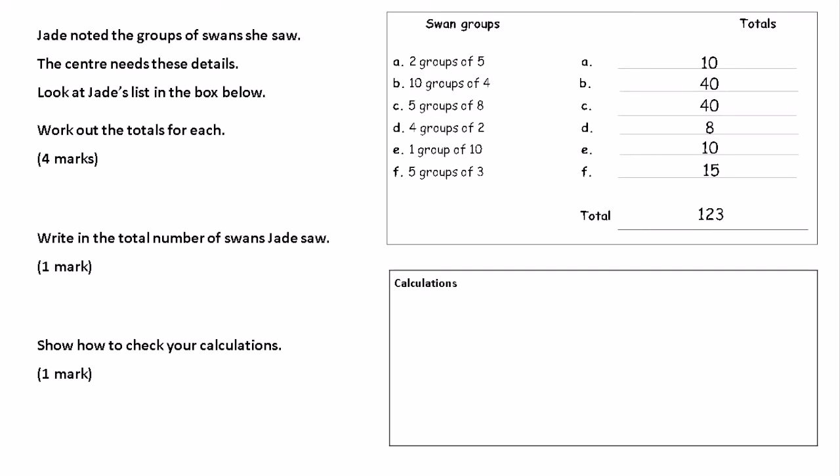And you'll get a mark for showing how you've calculated this. And it's just simple, isn't it? It's just 10 plus 40 plus 40 plus 8 plus 10 plus 15 equals 123.